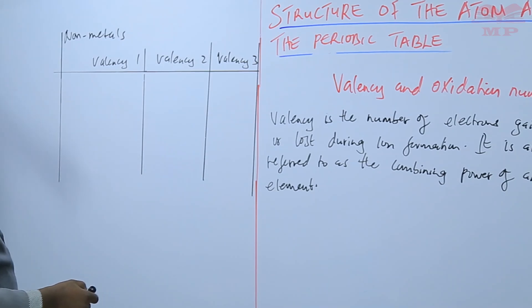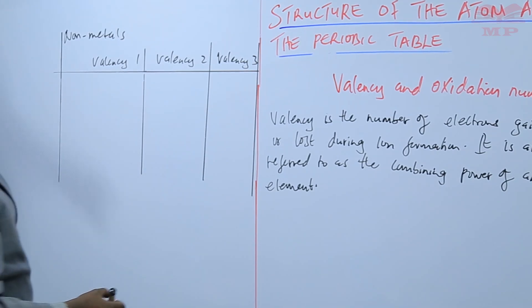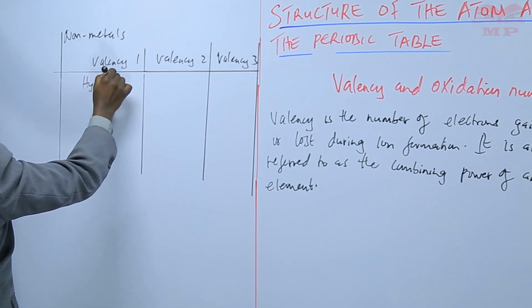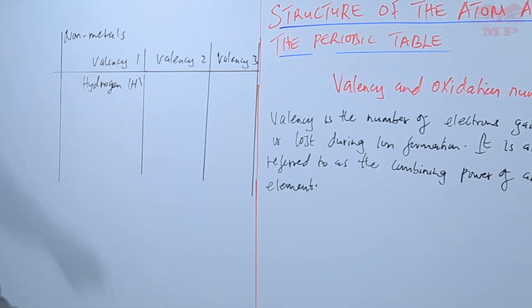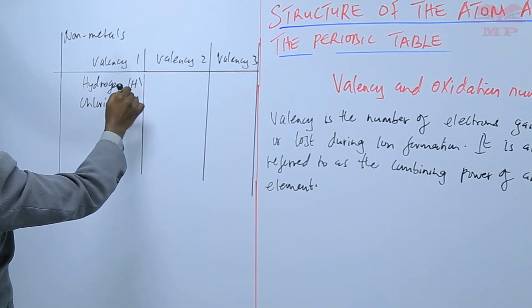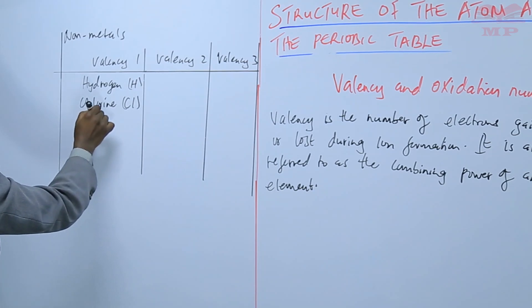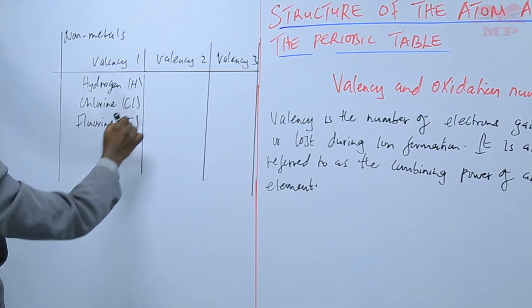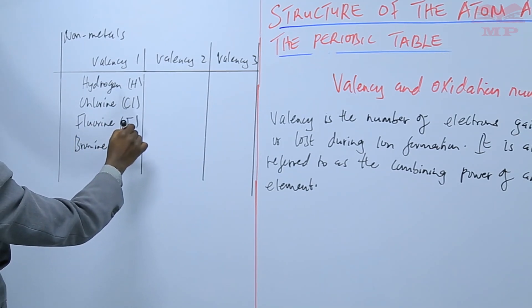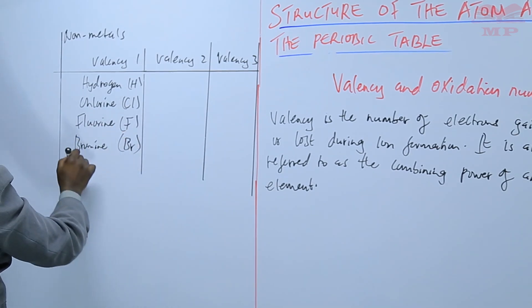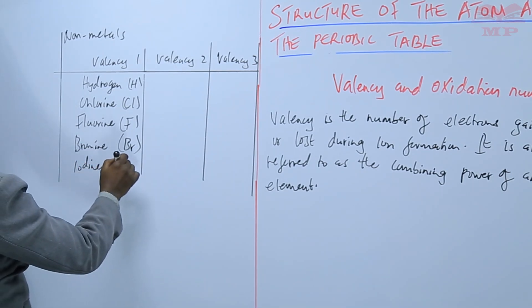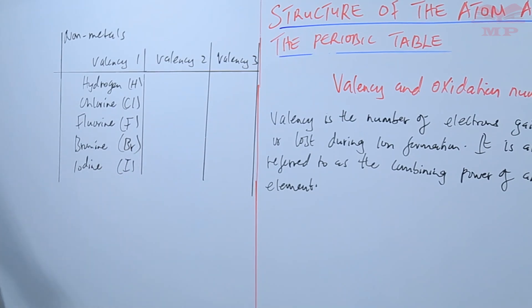For non-metals with a valency of 1, we have hydrogen, chlorine, fluorine, bromine, and iodine. Basically these are group 7 elements.